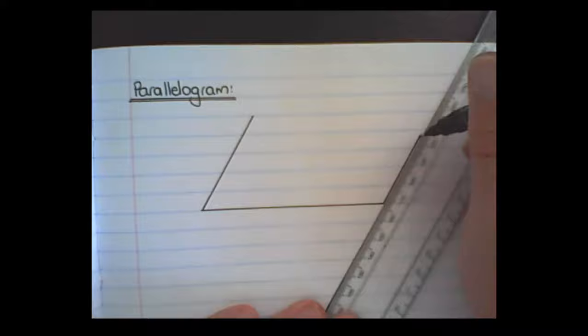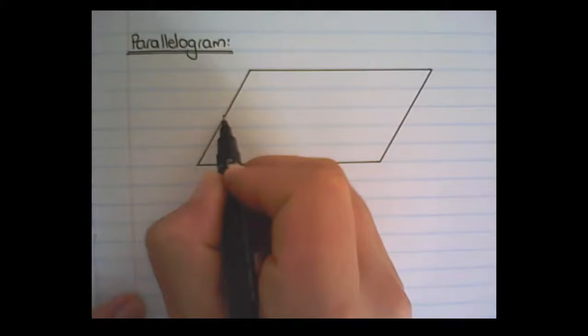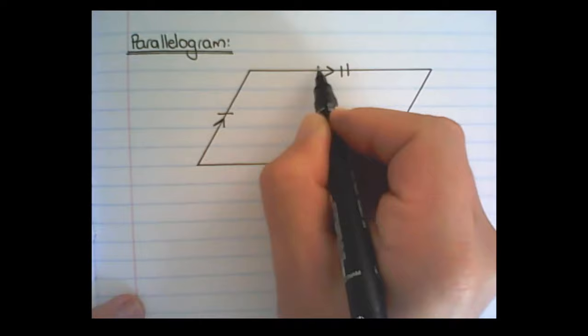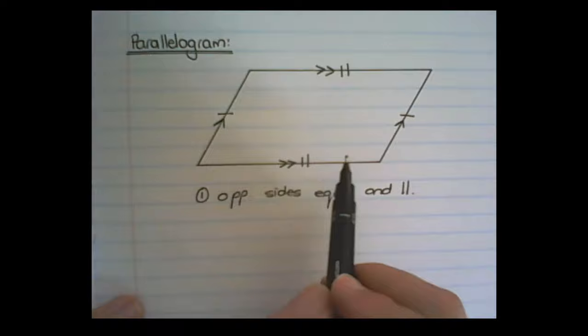The next quadrilateral is the parallelogram. What we know about the parallelogram is that the opposite sides are equal in length and the opposite sides are parallel — we indicate parallel with arrows. The interior angles are not all the same, but the opposite angles are equal in size.